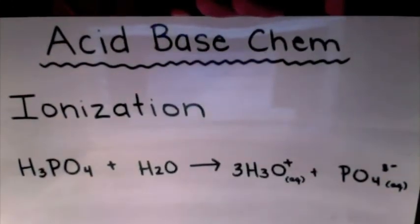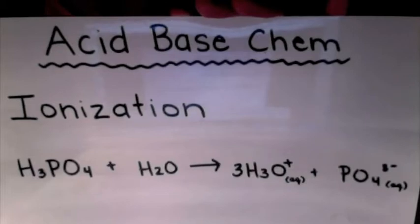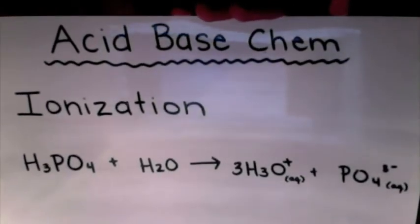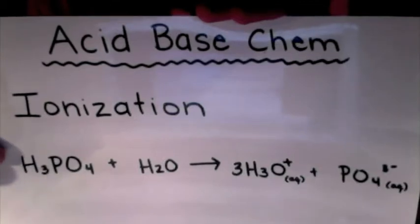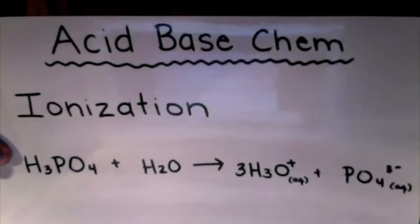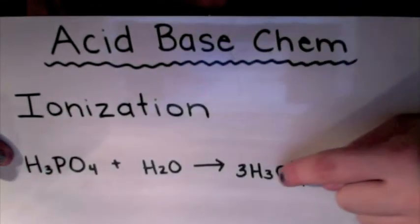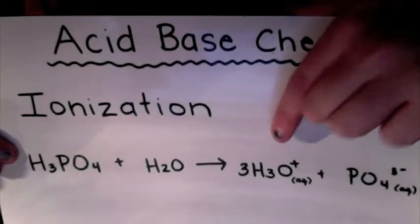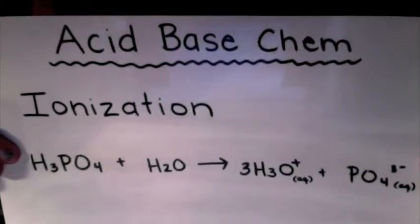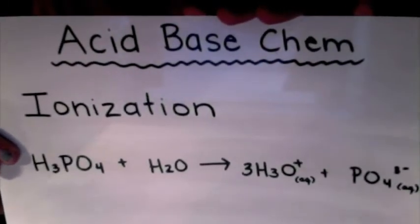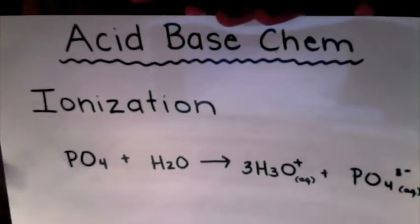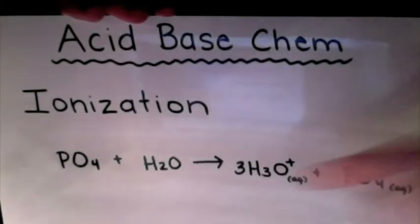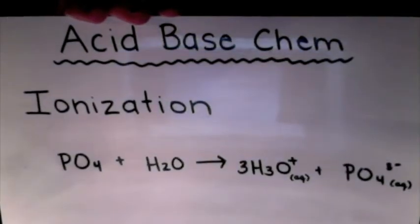If you have a polyprotic acid — something with more than one hydrogen — what's going to happen is water is going to slowly remove each one of those hydrogens one at a time. So you're going to need three waters to attack because you have three hydrogen atoms. One water comes in, pulls off one hydrogen, and creates one H₃O⁺. Because there are three hydrogens, you can make three H₃O⁺. You're left with PO₄³⁻, because you've lost three hydrogens, and you need three in front of that H₂O as well.